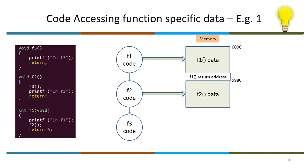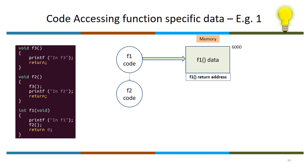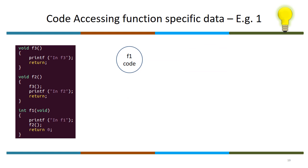F2 is invoked, F2-specific data is allocated. F2 return address is stored, F3 is invoked, F3-specific data is allocated, and F3 accesses the code. Please assume there are local variables in every function. We unwind the stack frames. The code unwinding shown is just to illustrate that execution control moves back — in reality only the data is unwound. The code will always be there till the program completes execution.